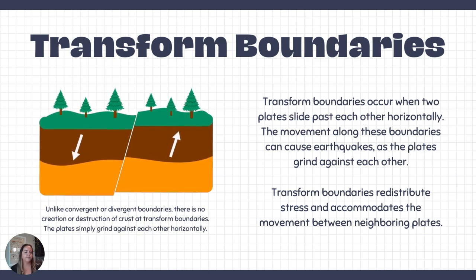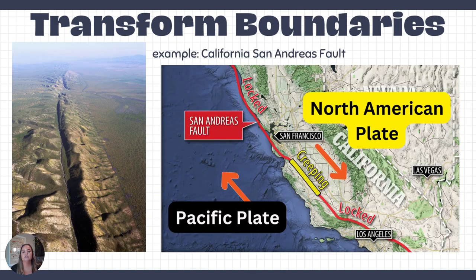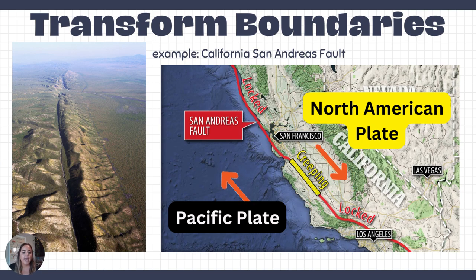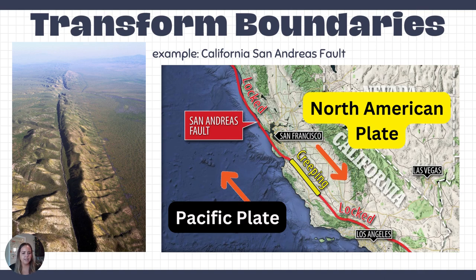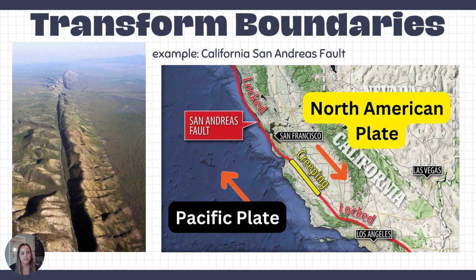This happens most notably in California at the San Andreas Fault, which separates the North American Plate from the Pacific Plate. Where they slide past, we see a lot of crumbling of crust and low mountains along the Coast Ranges. The fault has locked sections and creeping sections — locked areas are problematic because when they shift, they produce very intense earthquakes, while creeping sections release energy little by little.